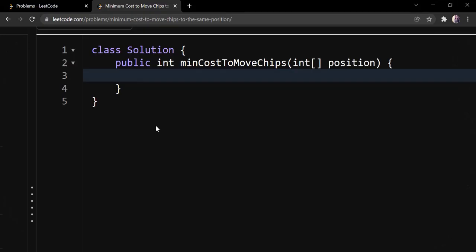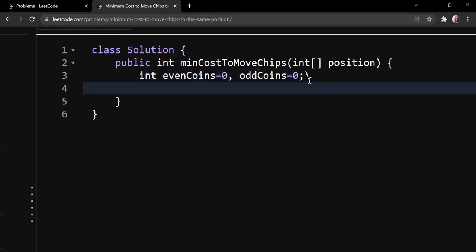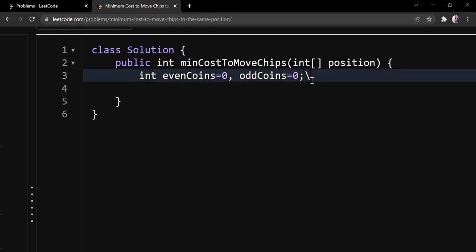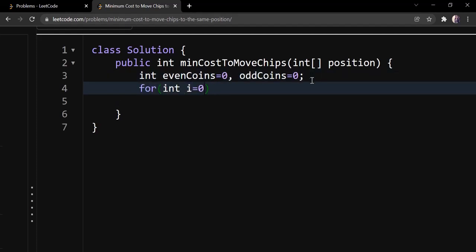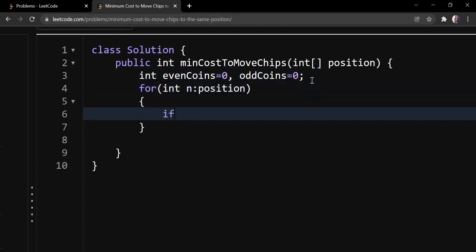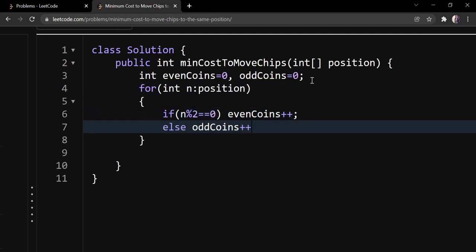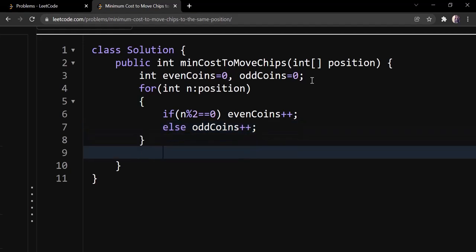The code is also pretty simple and straightforward. As I said, we are going to have two variables to count even and odd coins. So we are going to iterate our array and we are going to keep the count of even and odd position coins. So now we have the count. Finally we are going to return the minimum of both.